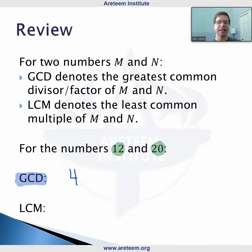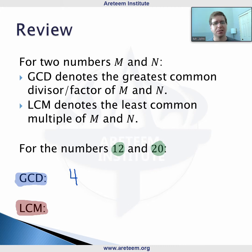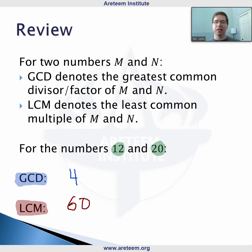If we look at the LCM, this is the least common multiple of those numbers. For small numbers, you can just calculate this out. 20 is not a multiple of 12. 40 is not a multiple of 12. 60 is a multiple of 12 — that's 12 times 5. So the LCM is going to be 60. We can calculate this pretty straightforwardly for small numbers.